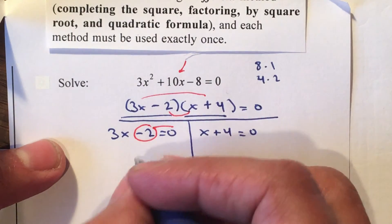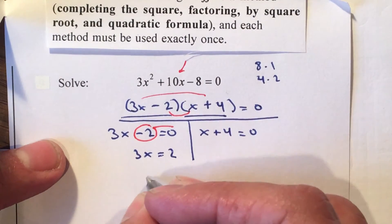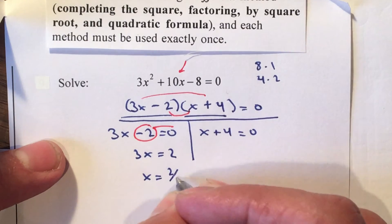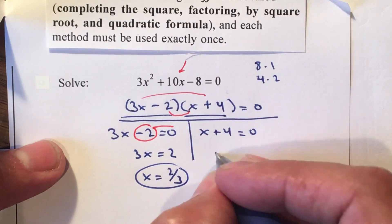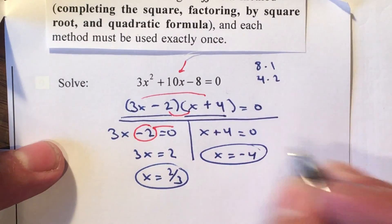Move the 2 to the other side we get positive 2, divide by 3. Move the 4 to the other side we get negative 4.